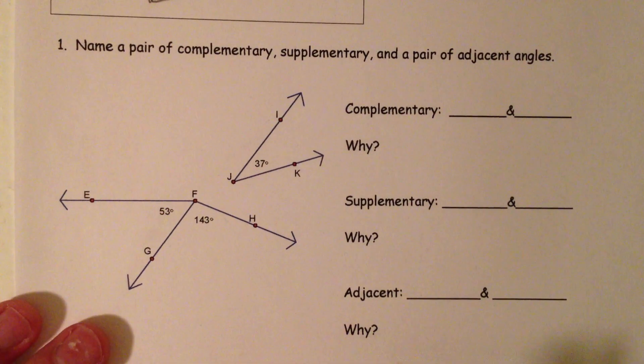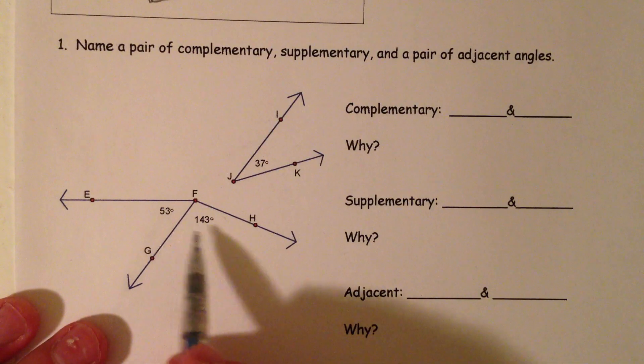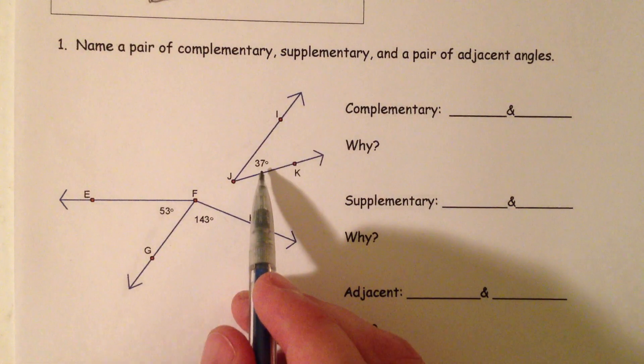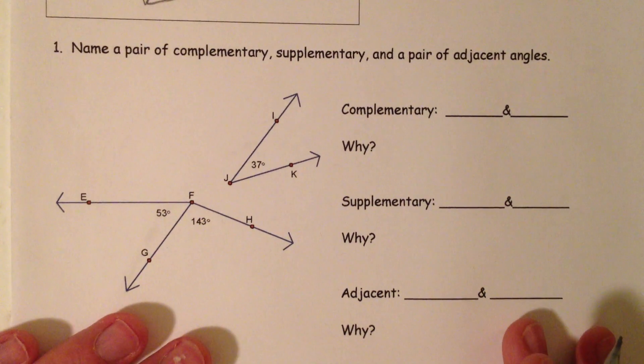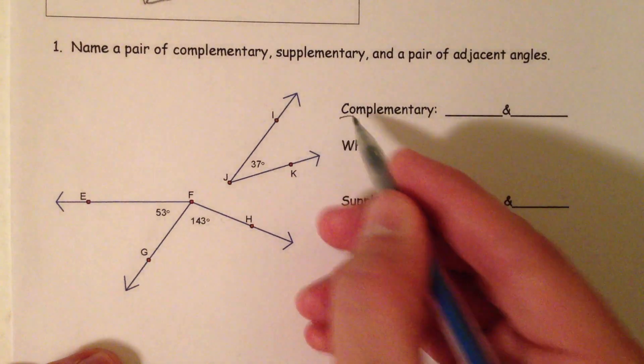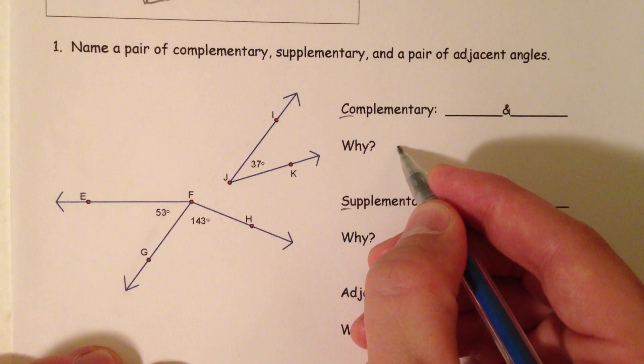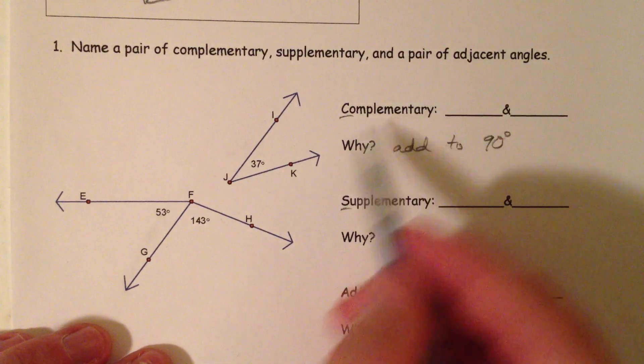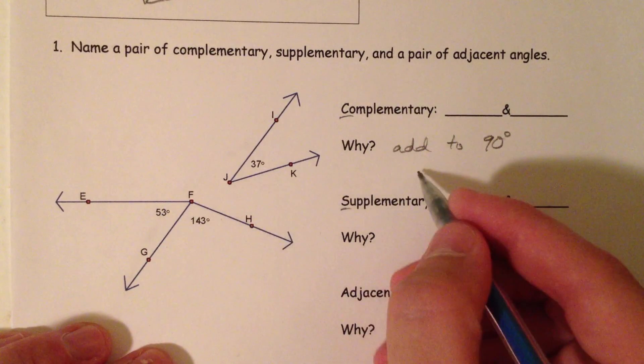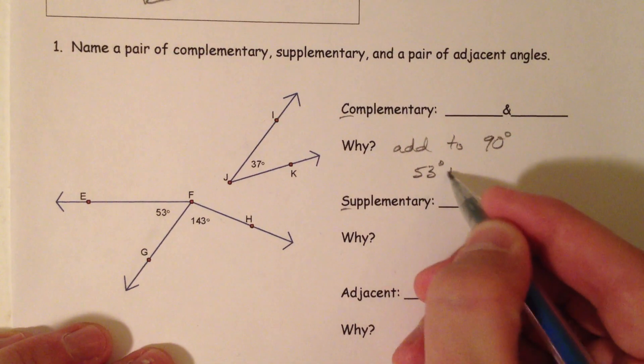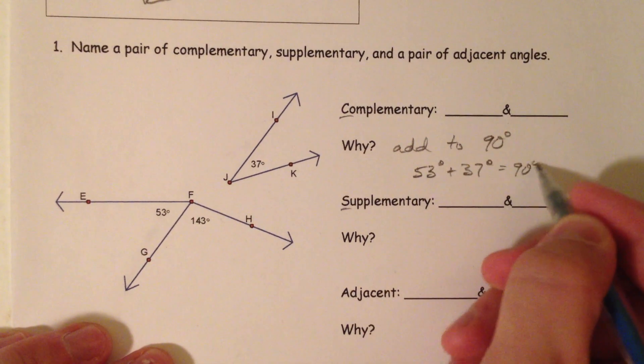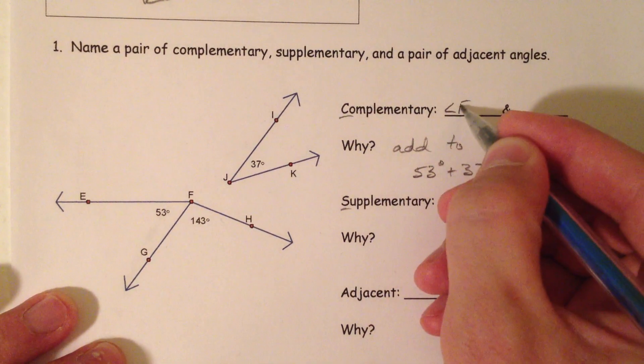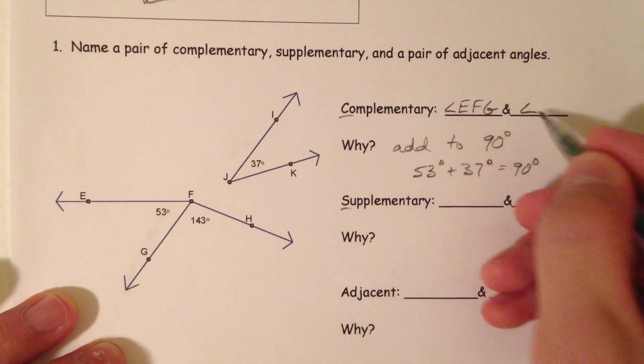So a little bit of practice. So we've got an angle that is 53, an angle that is 143, and an angle that is 37. Out of these, which angles are complementary? So complementary, you have to think the C comes before the S, and so these have to add to 90. And so complementary angles, 53 and 37, add to 90. And so we could say angle EFG and angle IJK. Now, you could just say angle J right here because there's no question, but you have to use all three letters there.